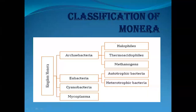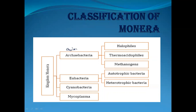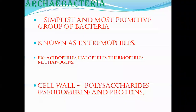Hello kids, welcome to my channel. Today's topic is classification of Monera. Monera is classified into archaebacteria (ancient bacteria), eubacteria (real bacteria), cyanobacteria which are known as blue-green algae, and mycoplasma, a cell wall deficient bacteria. Let's get into the detail.